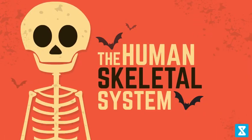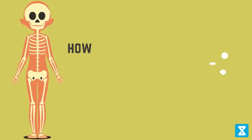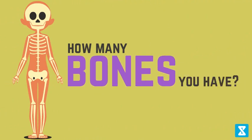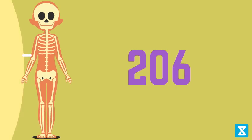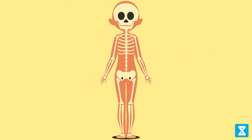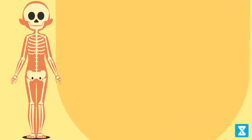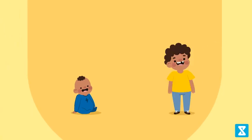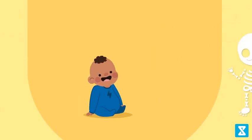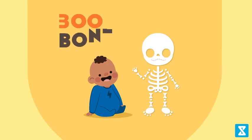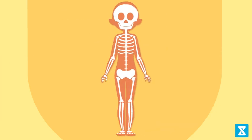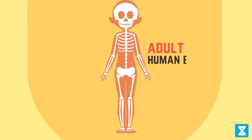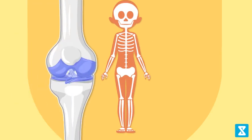The human skeletal system — do you have any idea how many bones you have in your body? 206, yes, that's correct. But did you know that the number of bones you have changes from when you are a baby to when you are grown up? Babies start out with more than 300 bones, and over time these bones grow and merge together to form the 206 bones present in an adult human body.